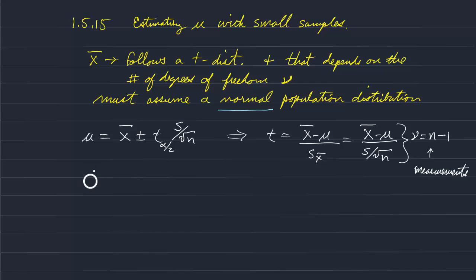So once you decide on alpha, given alpha or alpha over 2 and nu, you can refer to a t-table, and I'll show you one in just a second, for the correct t-value.